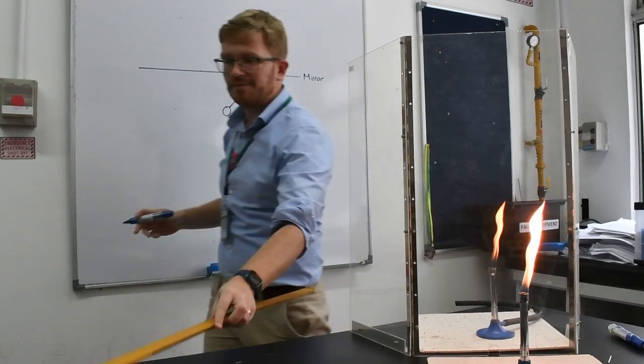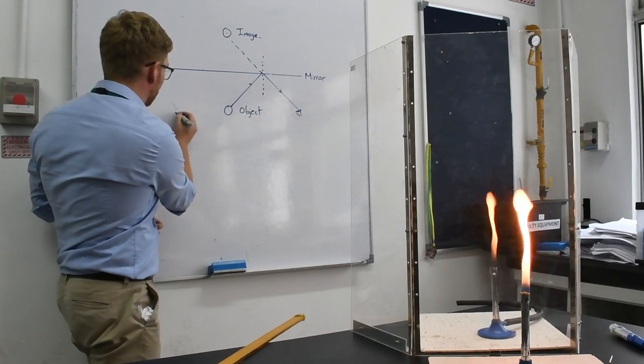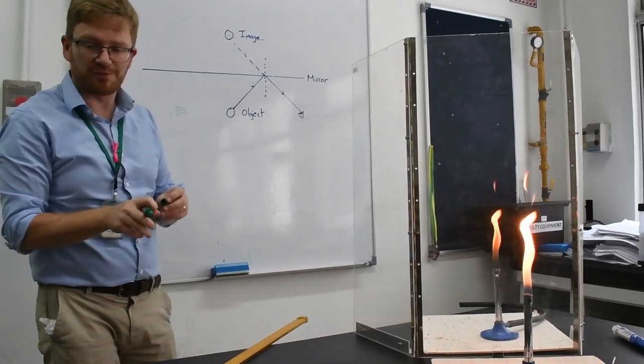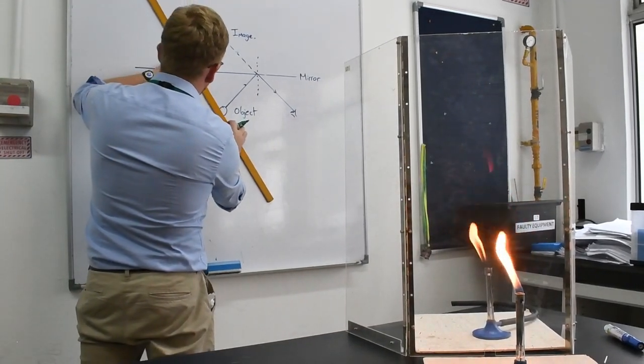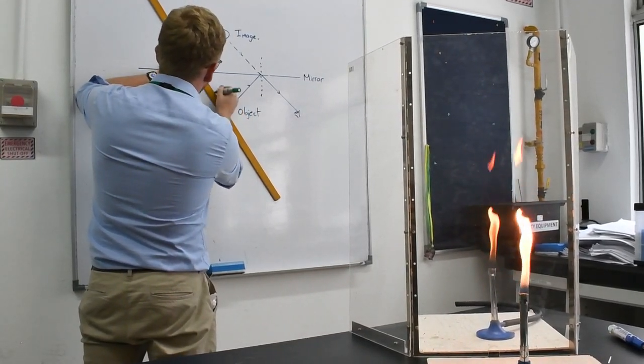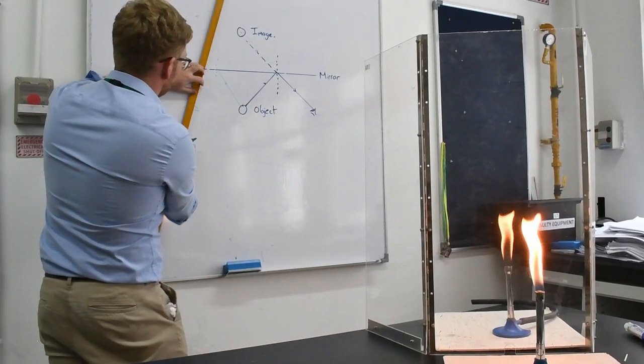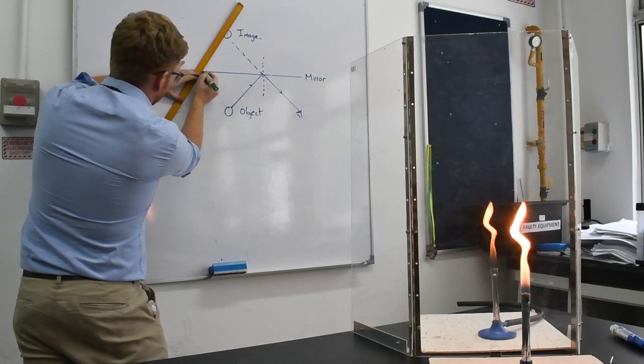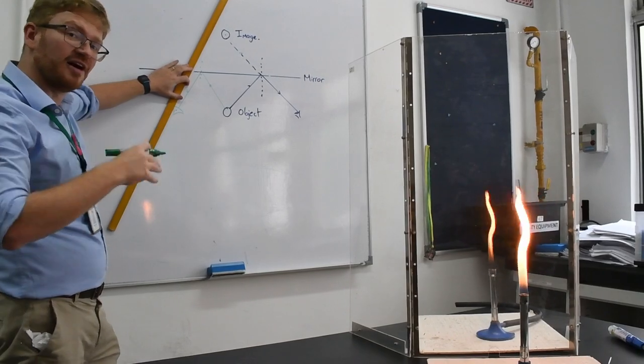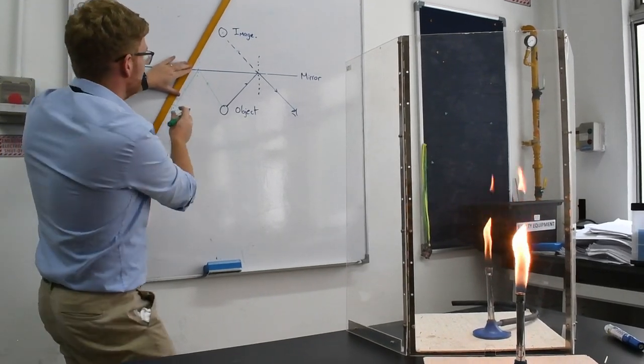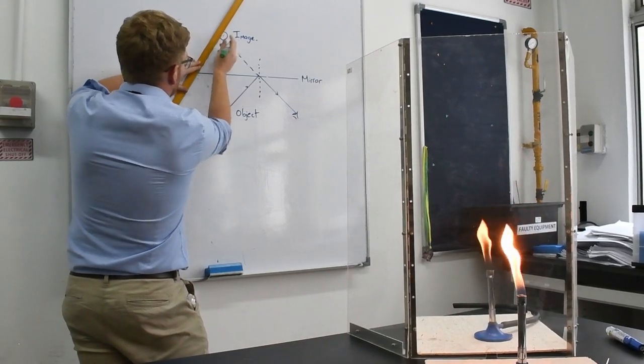And that same thing happens if I look at it from a different angle. If I move my eye to look at it from the other side, exactly the same process happens again. Light leaves the object, it reflects off of the mirror, an equal angle of reflection to the angle of incidence, and it enters my eye. But again, my eye doesn't know that the light has changed direction, so it looks as though it's come from here.